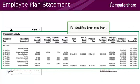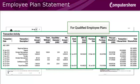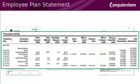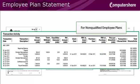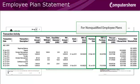For Qualified Employee Plans, the statement now shows the grant date, fair market value at grant, the purchase date, and the fair market value at purchase. For Non-Qualified Employee Plans, the statement shows the purchase date and fair market value at purchase.